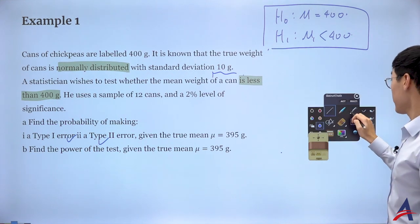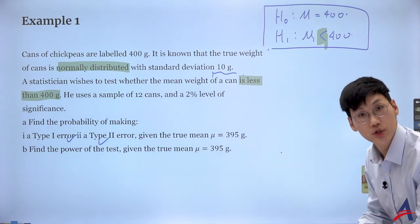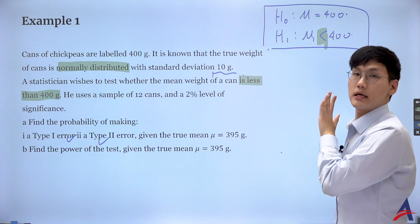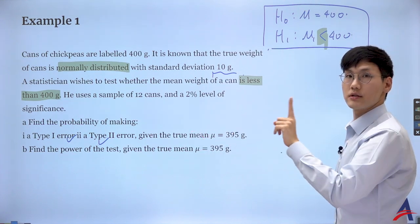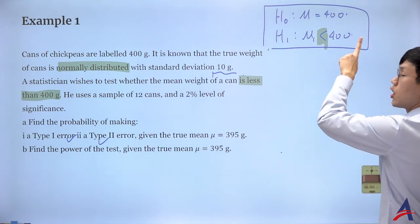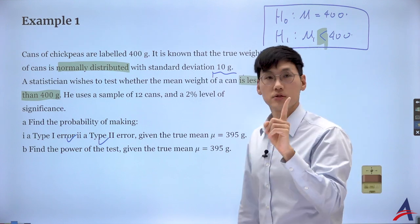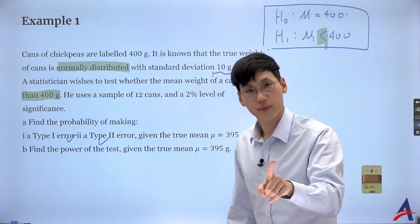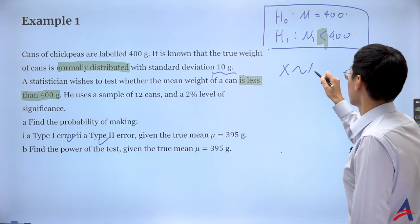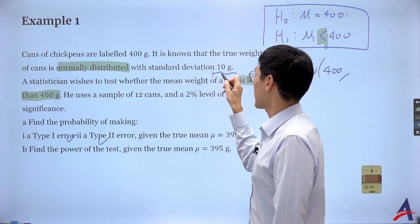This inequality in the alternative hypothesis is very important because it gives the direction of your acceptance and critical regions. Writing down the alternative hypothesis gives you the direction. Now I've decided the hypothesis, so I work with the normal distribution: X ~ N(400, 10²/12), using the null hypothesis mu = 400 and population standard deviation 10, with a sample of 12.